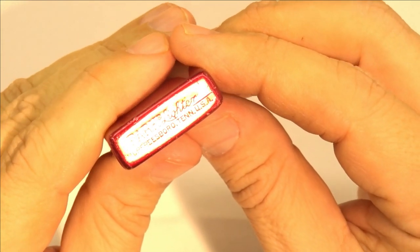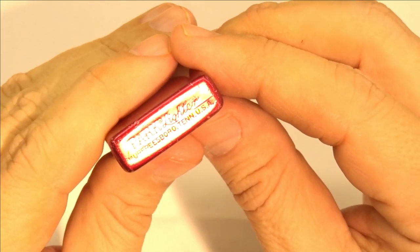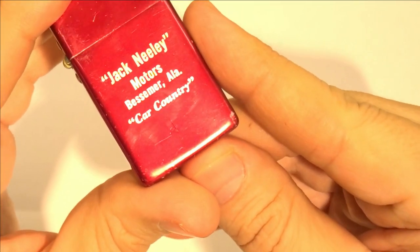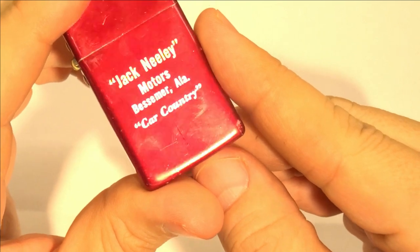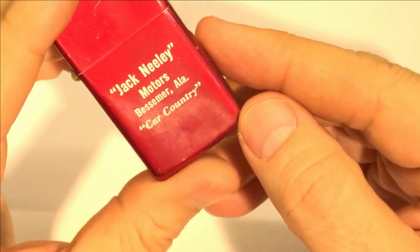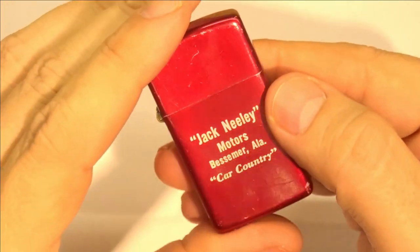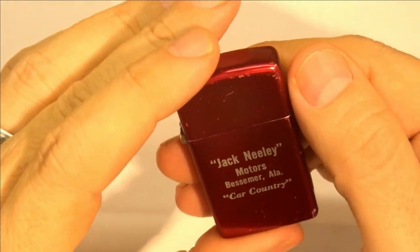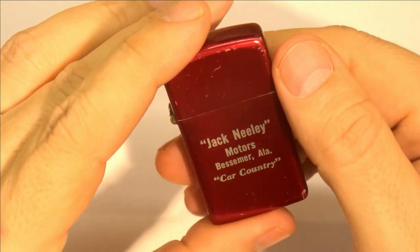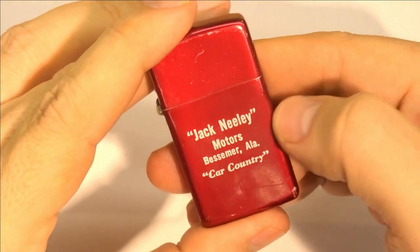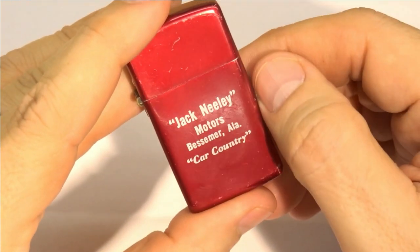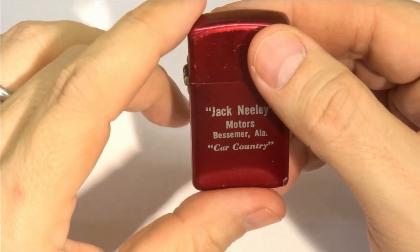So this lighter has on it markings that I hope will show up on the video here, but what it says is Park lighter Murfreesboro, Tennessee, USA. So that tells us that this lighter was likely made in the early 1960s and it is an advertisement for Jack Neely Motors in Bessemer, Alabama car country. I've tried to research Jack Neely Motors and was not able to come up with any information on it. However, one of my viewers sent a comment that said that he remembers seeing Jack Neely Motors signs when he was growing up in Bessemer, Alabama. So, very interesting.